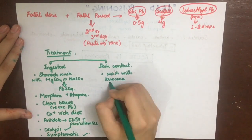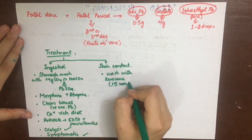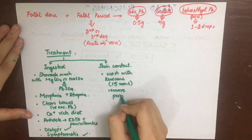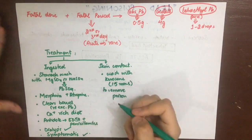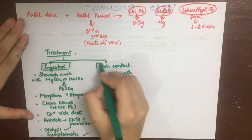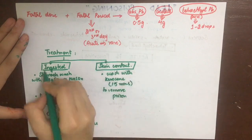If there is skin contact with tetra ethyl lead, we should wash the area with kerosene within 15 minutes to remove the poison quantitatively.